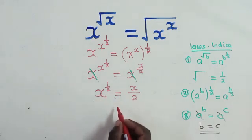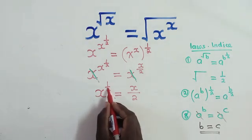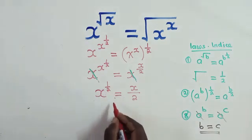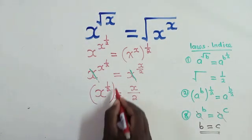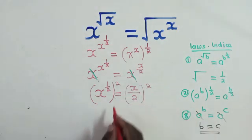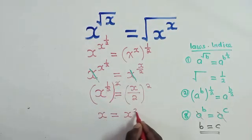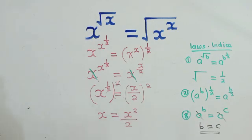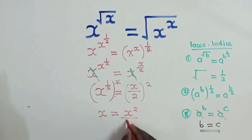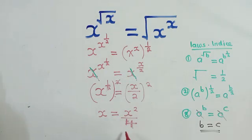We can cross multiply, but before we cross multiply, we can get rid of this power here, 1 over 2. It's a fraction. So we can say raised to the power 2 and also here power 2. So this and this will cancel. We shall remain with X which is equal to X squared over 4. Because 2 to the power 2 is 4. Remember we are solving for X.